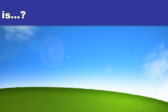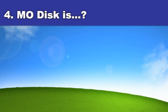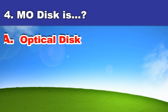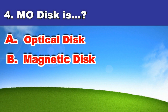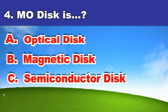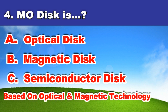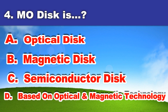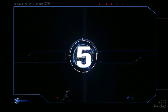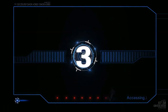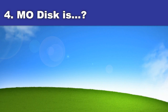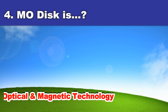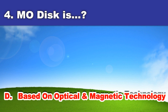Fourth question. MO disk is: A. Optical disk, B. A magnetic disk, C. Semiconductor disk, D. Based on optical and magnetic technology. And the answer is: Based on optical and magnetic technology.